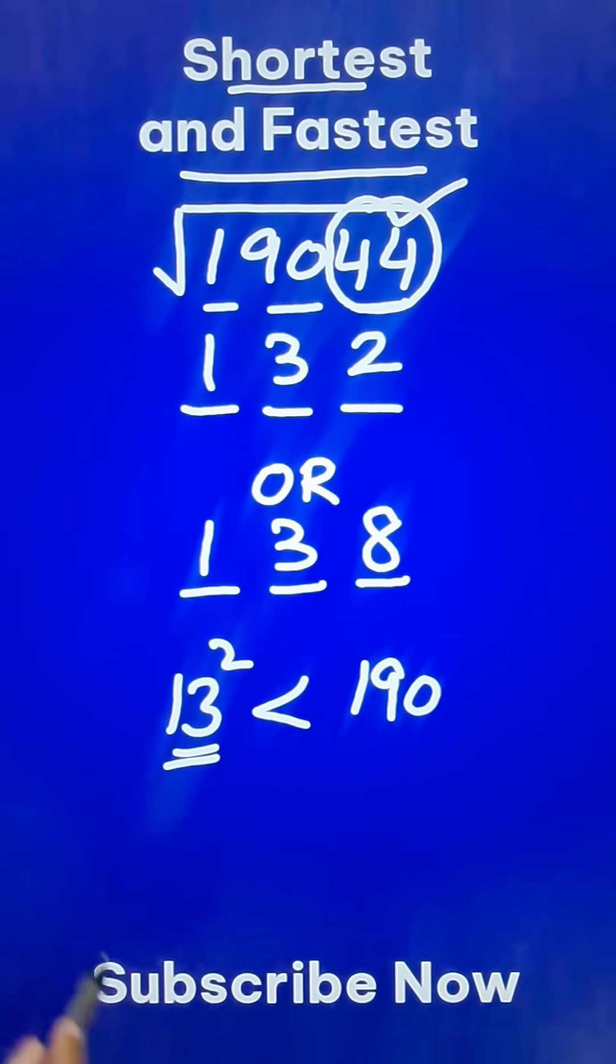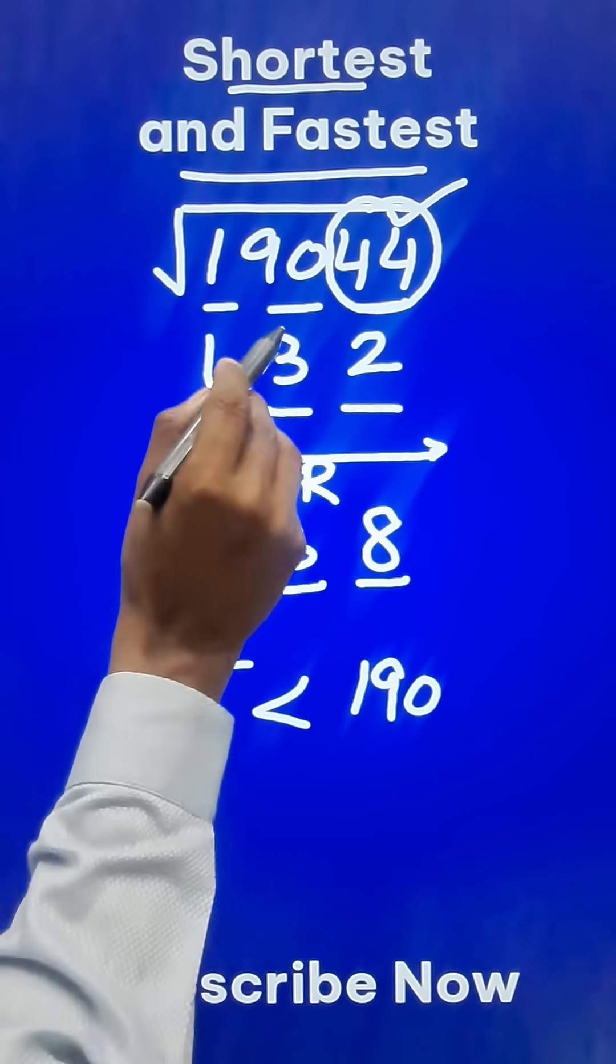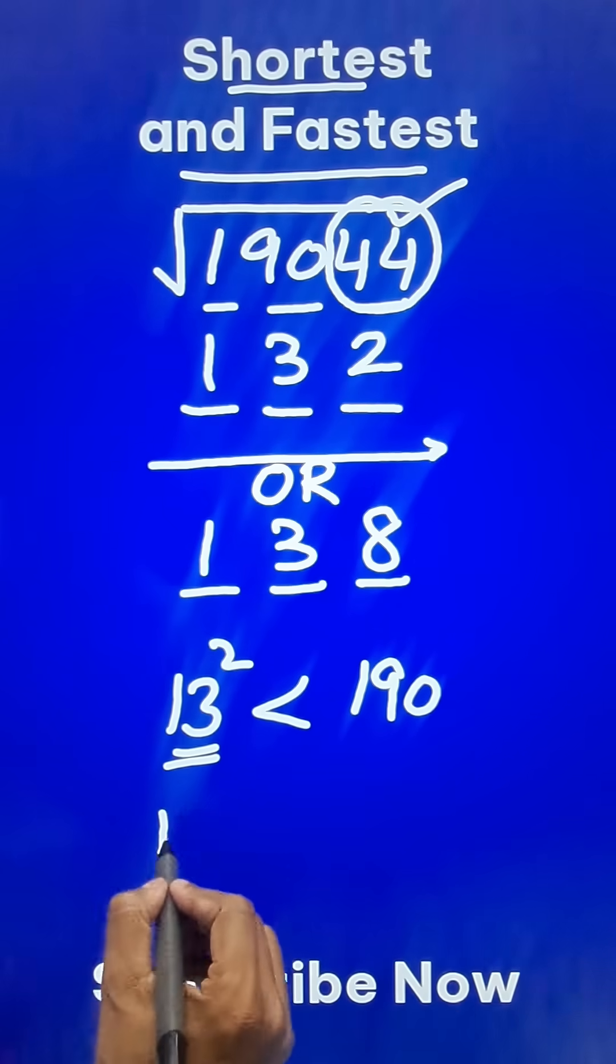Now which one is the correct one? For that you need to do the square of the intermediate number. Between 132 and 138 you have 135.